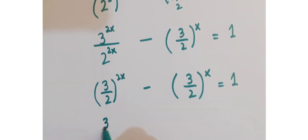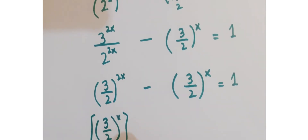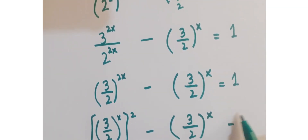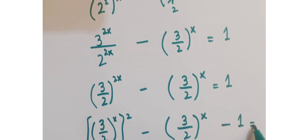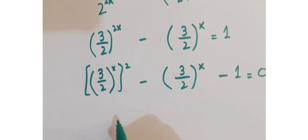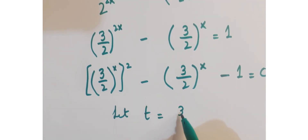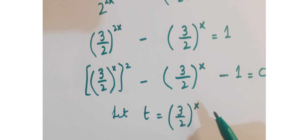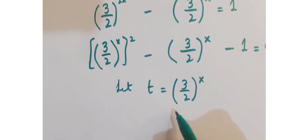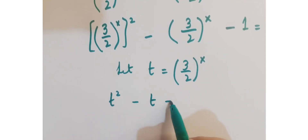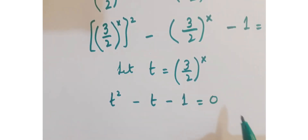Or you can write this as 3 upon 2 to the power x, whole to the power 2, minus 3 upon 2 whole to the power x. Now let's assume that t equals 3 upon 2 whole to the power x. Now substitute our assumption in the equation. So we have t squared minus t minus 1 equals 0.